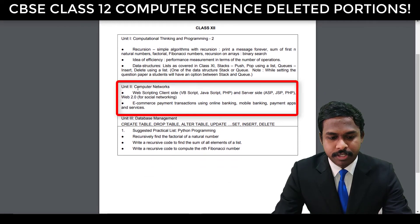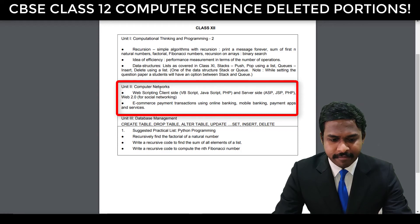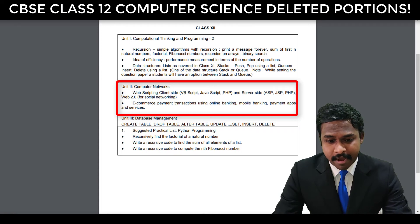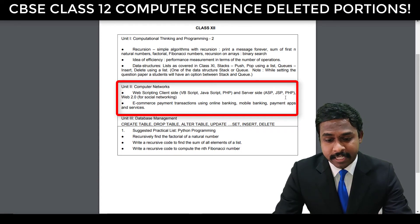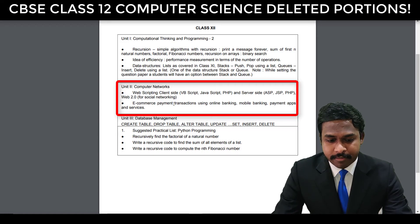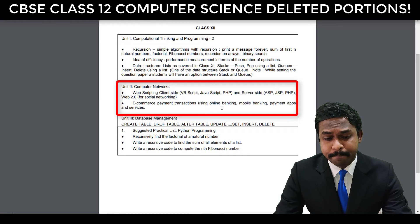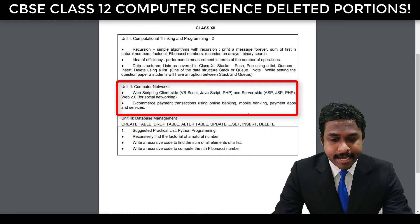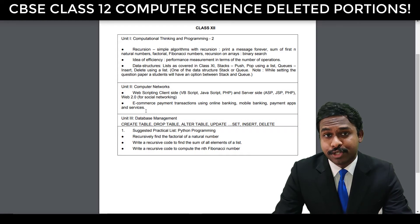Unit 2 — Computer Networks — does not have web scraping, web scripting client side (VBScript, JavaScript, PHP), server side (ASP, JSP, PHP), Web 2.0 for social networking and e-commerce, payment transactions using online banking, mobile banking, and payment apps and services. You don't have any of that in Unit 2.